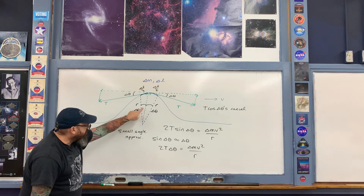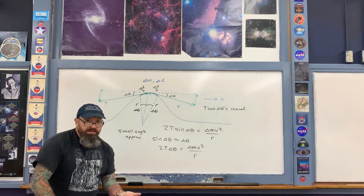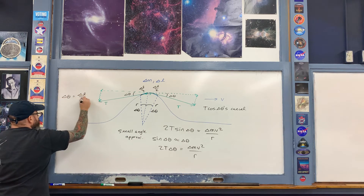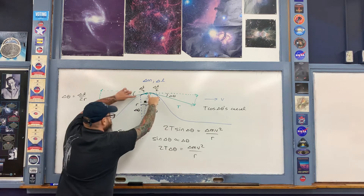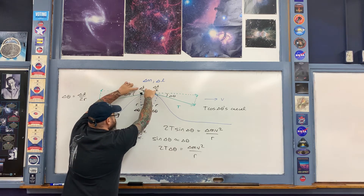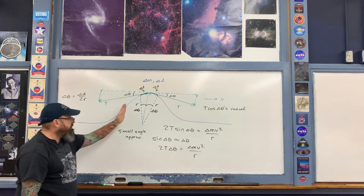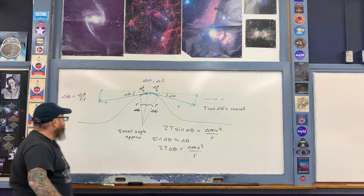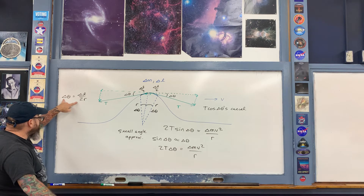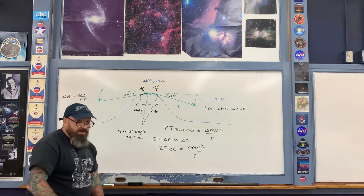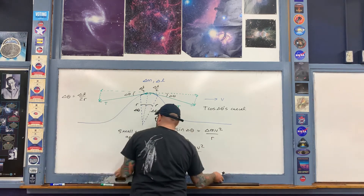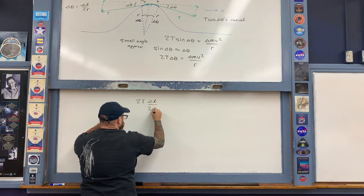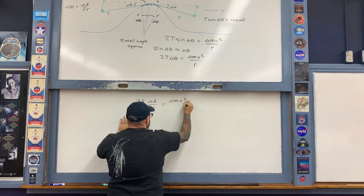Now I have the angle delta theta, and I'll write it in terms of radian measure. Recall that angle equals arc length divided by radius. Here on the left, the arc length is delta L over 2 and the radius is R — the radius of the imaginary circle that delta m traces as the pulse propagates. Substituting this expression for delta theta into the equation gives 2T times (delta L over 2R) equals delta m times v squared over R.